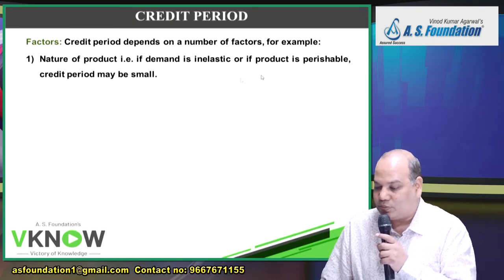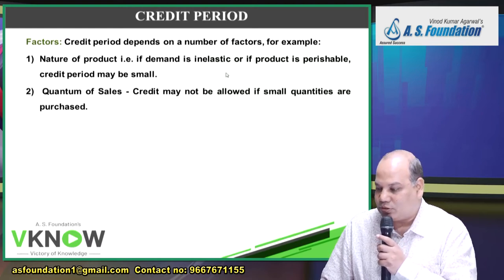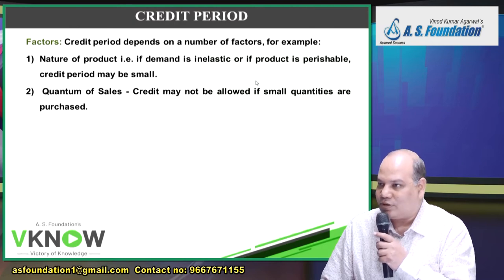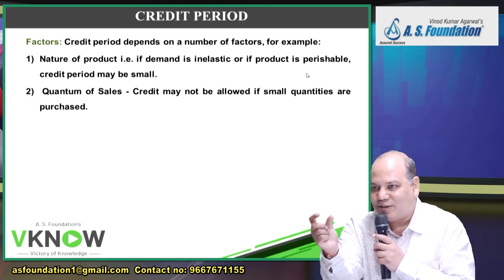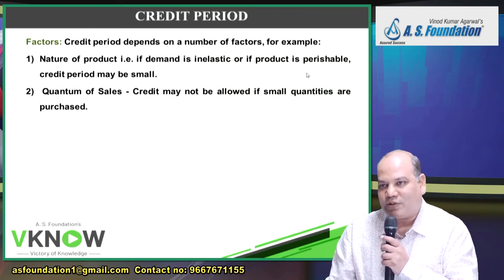If the product is perishable, the credit period will be small. For example, if you buy a washing machine you can go for easy installments of 12 months. But if you buy ice cream, you can't ask for credit — the product is already consumed. Similarly, you buy vegetables on cash, not on three months credit.